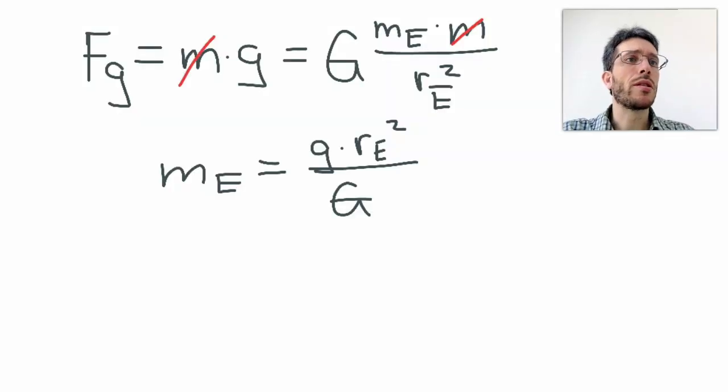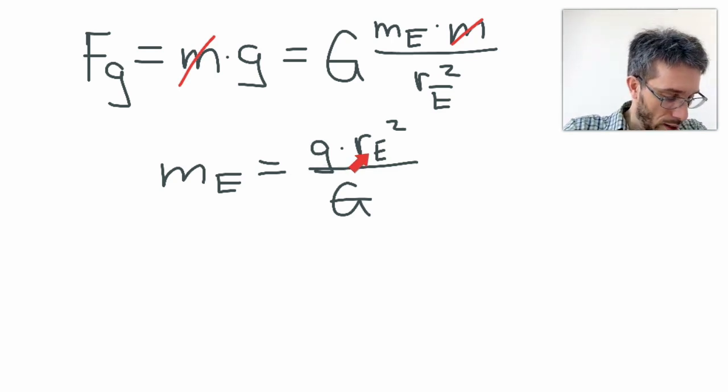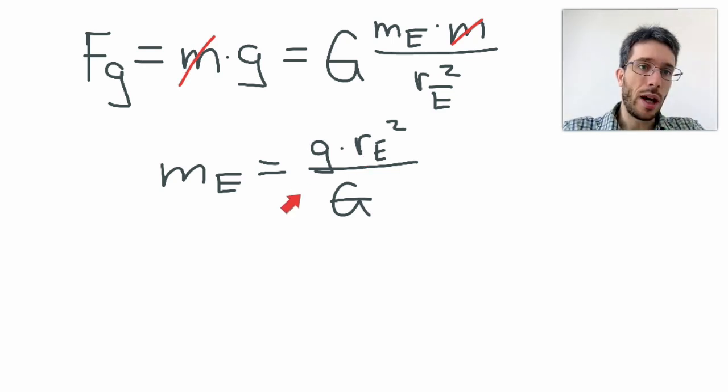Now, in today's world, I can just look up the values on the internet. We know that the small g is 9.8 meters per second squared. I can look up that the radius of the Earth is 6.37 times 10 to the 6 meters, and the capital G, the universal gravity constant, is 6.67 times 10 to the minus 11 newton square meters per kilogram squared.